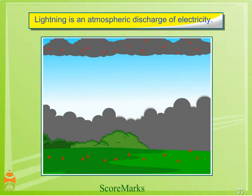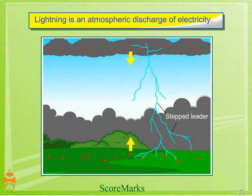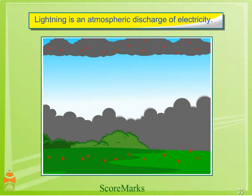A lightning stroke begins with an invisible discharge called the stepped leader, which moves downwards. Another leader from the ground rises up to meet the upper leader. When they both come in contact, visible lightning, called the return stroke, propagates upwards from the ground along the same path. This is how lightning occurs.